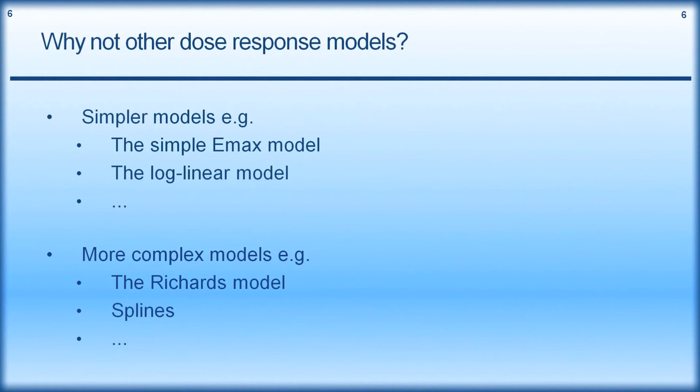So what about more complex models? For example, the Richards model. The sigmoidal Emax model is a nested model within the Richards model. Why would we not consider the Richards model? Or perhaps other alternatives like splines. So where the dose response is allowed to go up and down and up again perhaps. They are very flexible, but perhaps they struggle with a pharmacological interpretation. So I'm not going to talk a lot about splines at the moment.